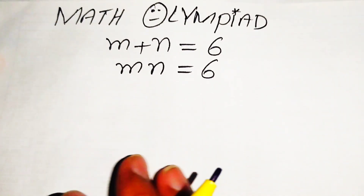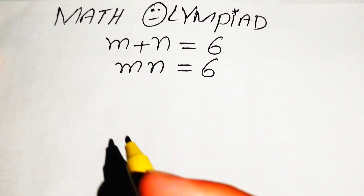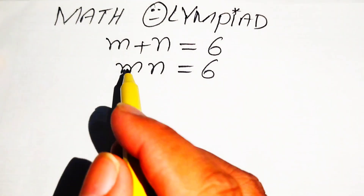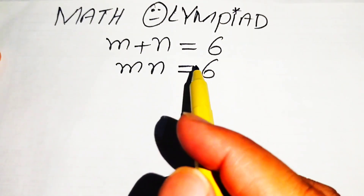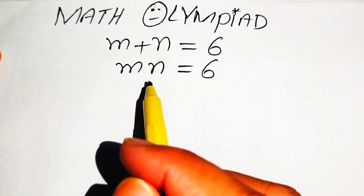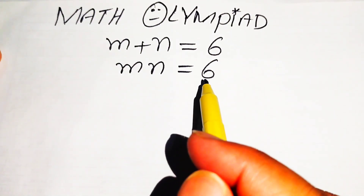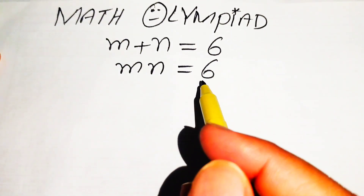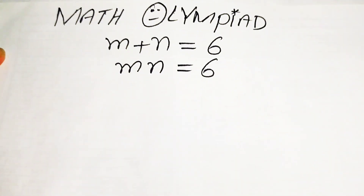Hello everyone, welcome. We solve this math Olympiad algebra problem where m plus n equals 6 and m multiplied by n equals 6. We will solve this problem for the values of m and n.